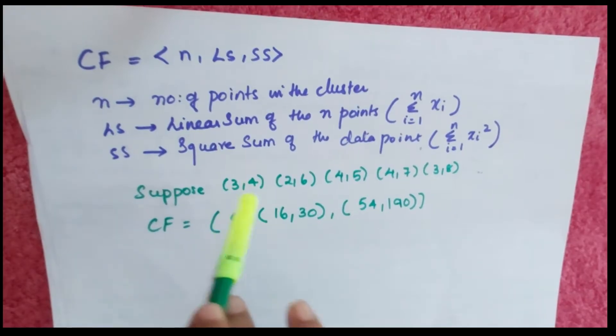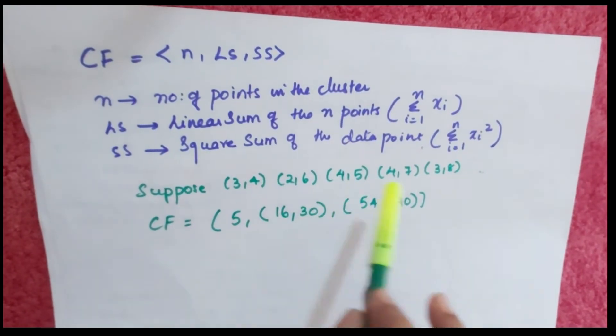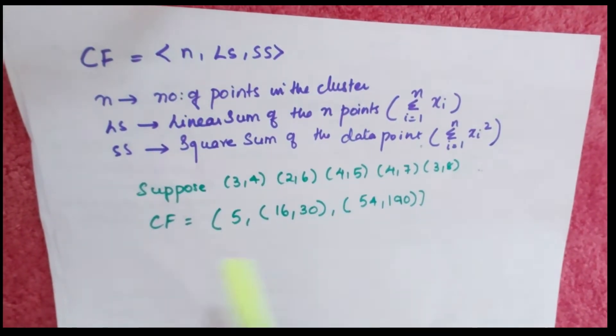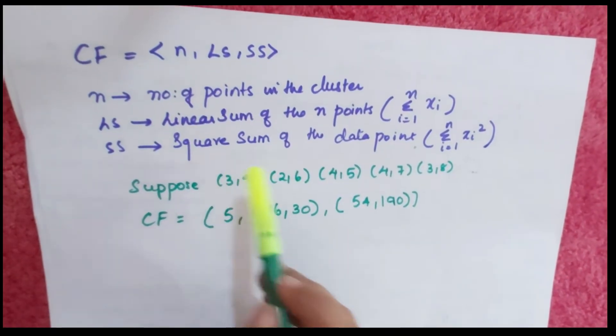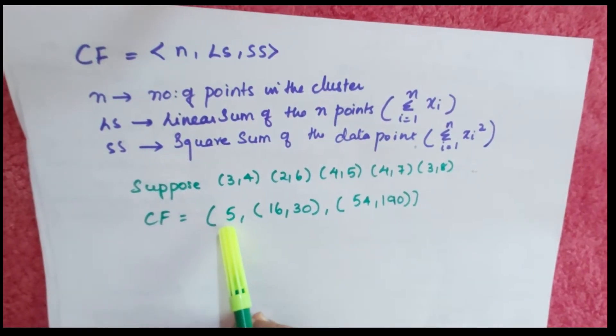We'll see how it's done. Suppose we are given points (3,4), (2,6), (4,5), (4,7), (3,8). What will be the CF? CF equals n, which is 1, 2, 3, 4, 5 points - that's 5.